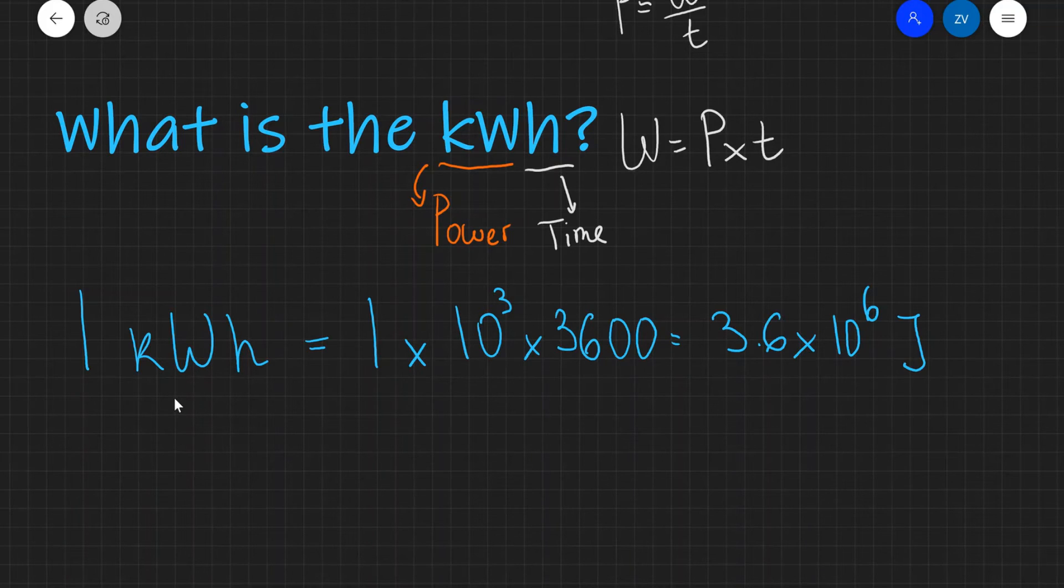It would be far more useful to have a unit which is a large amount of joules. So one kilowatt hour is actually equal to 3.6 times 10 to the power of six joules.